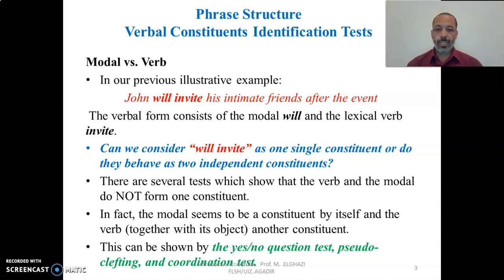In our previous illustrative example we have the sentence: 'John will invite his intimate friends after the event.' The verbal form consists of the modal 'will' and the full verb 'invite.' So can we consider 'will invite' as one single constituent, or do they behave as two independent constituents? In fact, the modal seems to be a constituent by itself, and the verb together with its object or complement or whatever comes after it is another constituent.